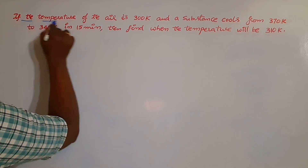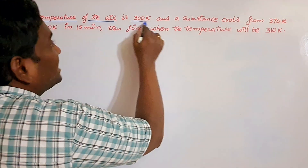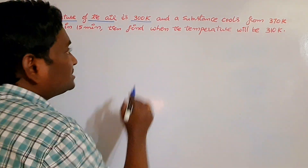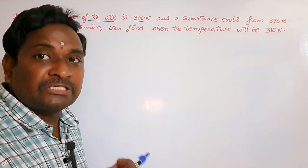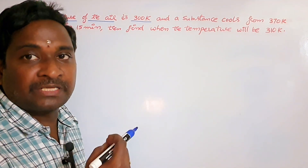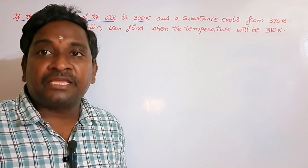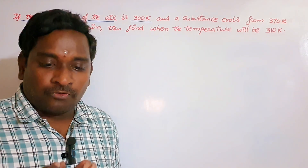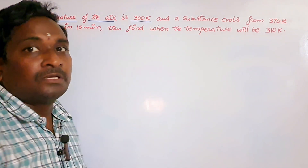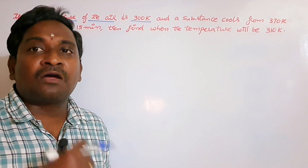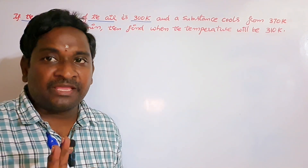If the temperature of the air is 300K — what does K mean here? Kelvins. Kelvins is another unit of temperature measurement. We can measure temperature in Centigrade, Fahrenheit, or Kelvins. Problems can use any of these units.